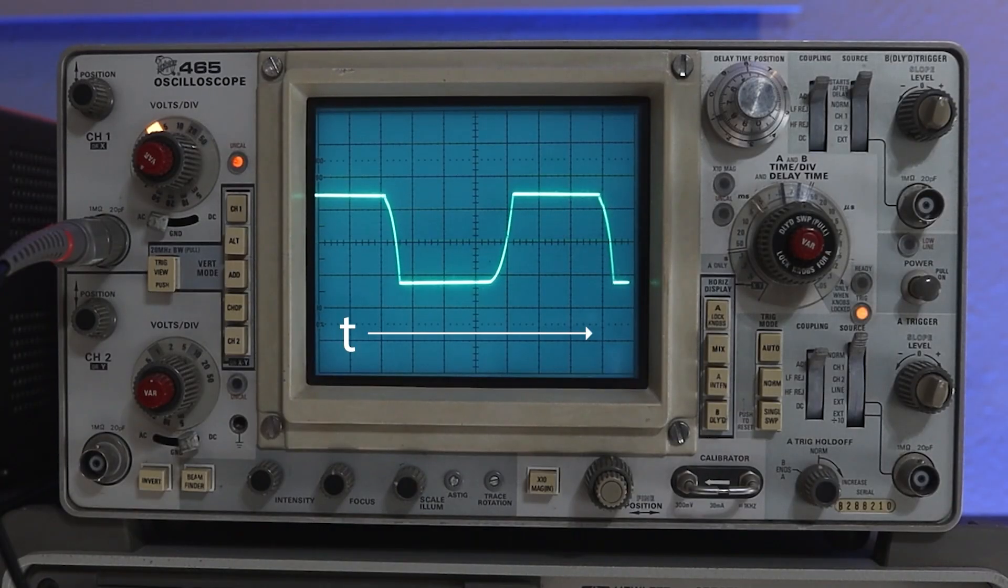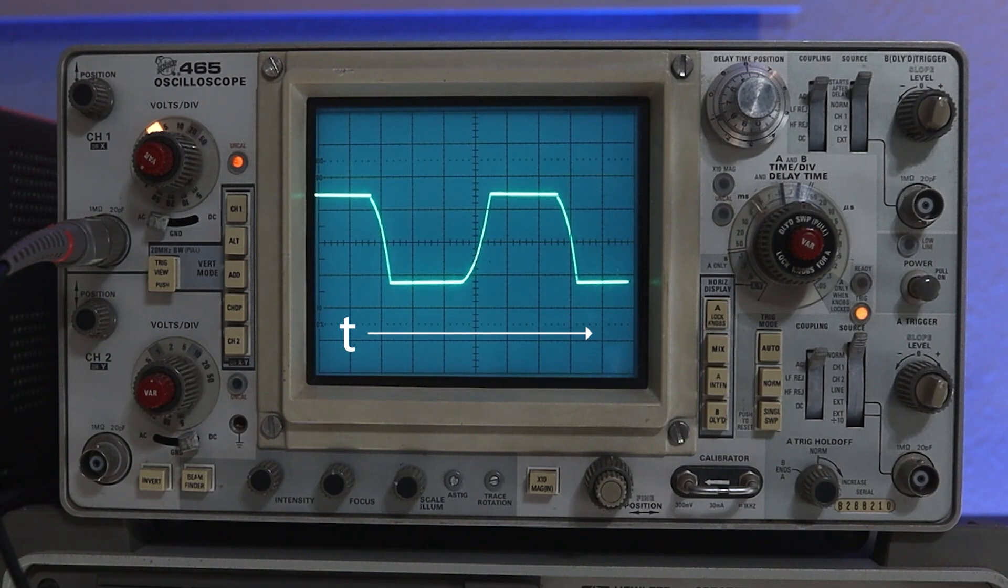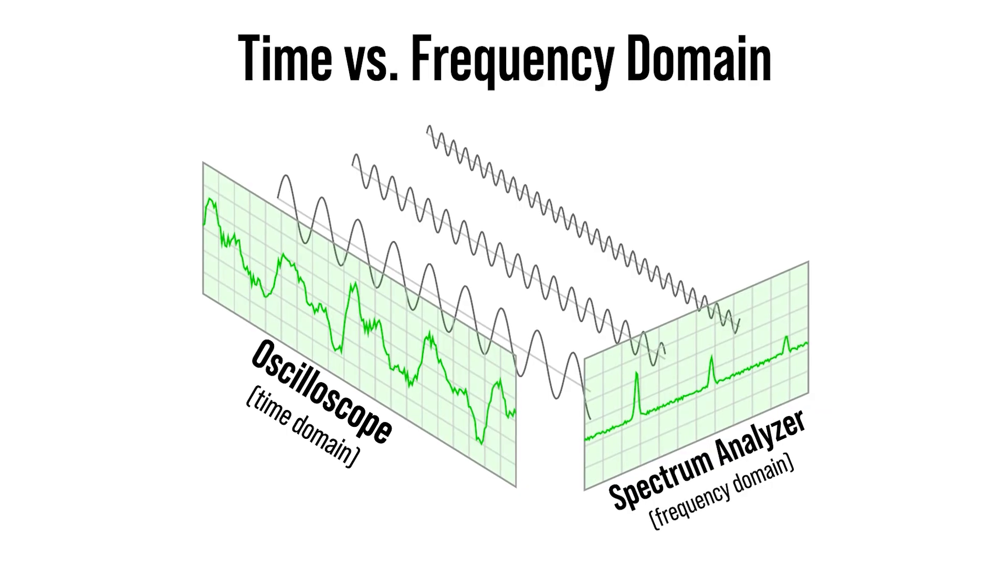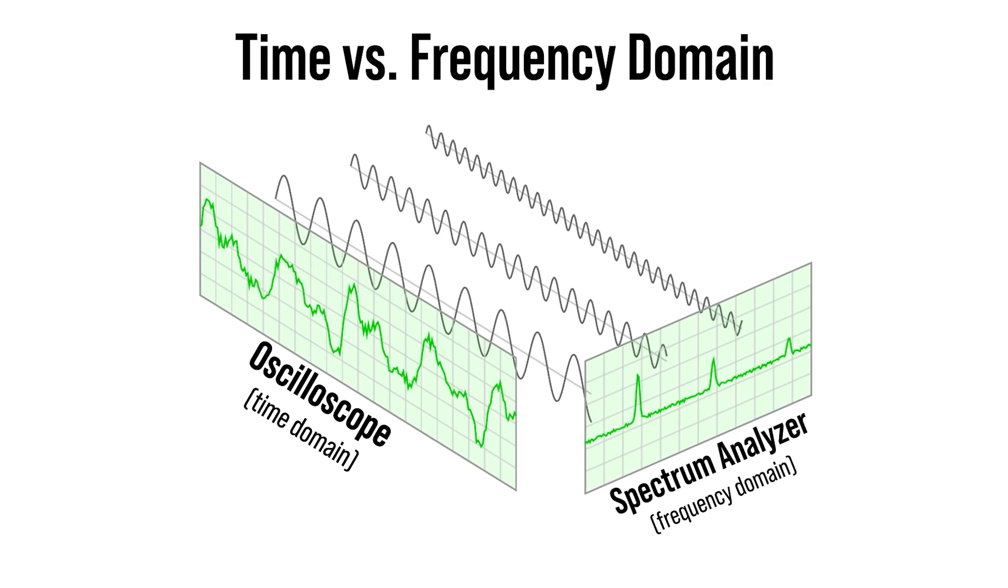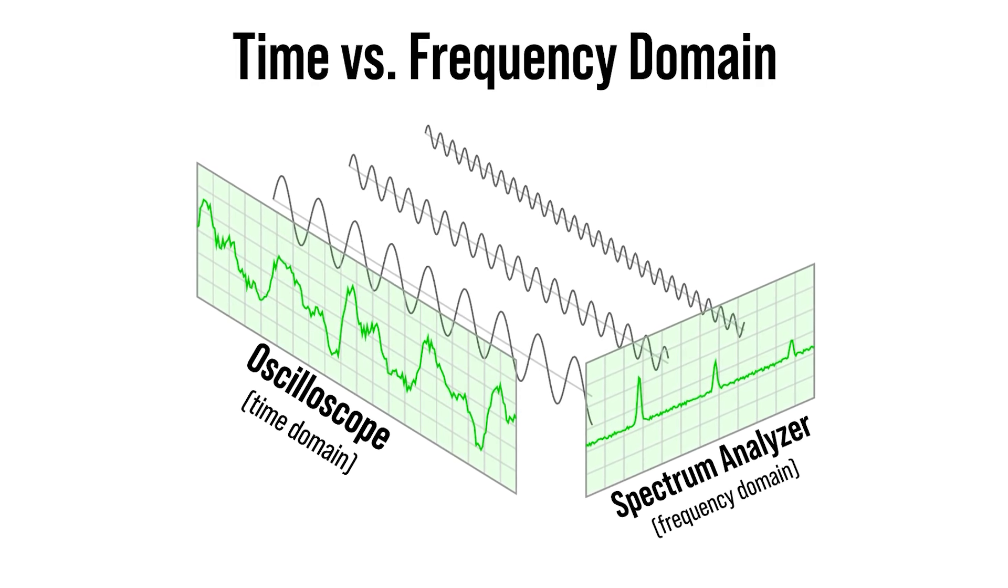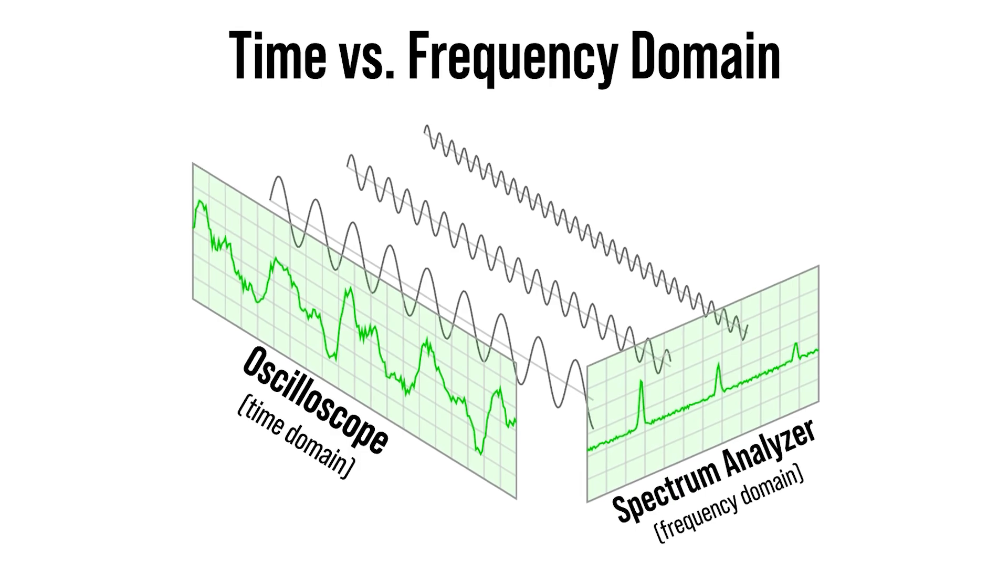When we look at signals on an oscilloscope, we're actually watching the signal change in amplitude over time, marching along the x-axis. That's fine for certain measurements, but what if we have one or more sine waves or want to analyze a more complex signal? We can break these individual components that make up this complex signal by looking at it in the frequency domain. This is the job of a spectrum analyzer.